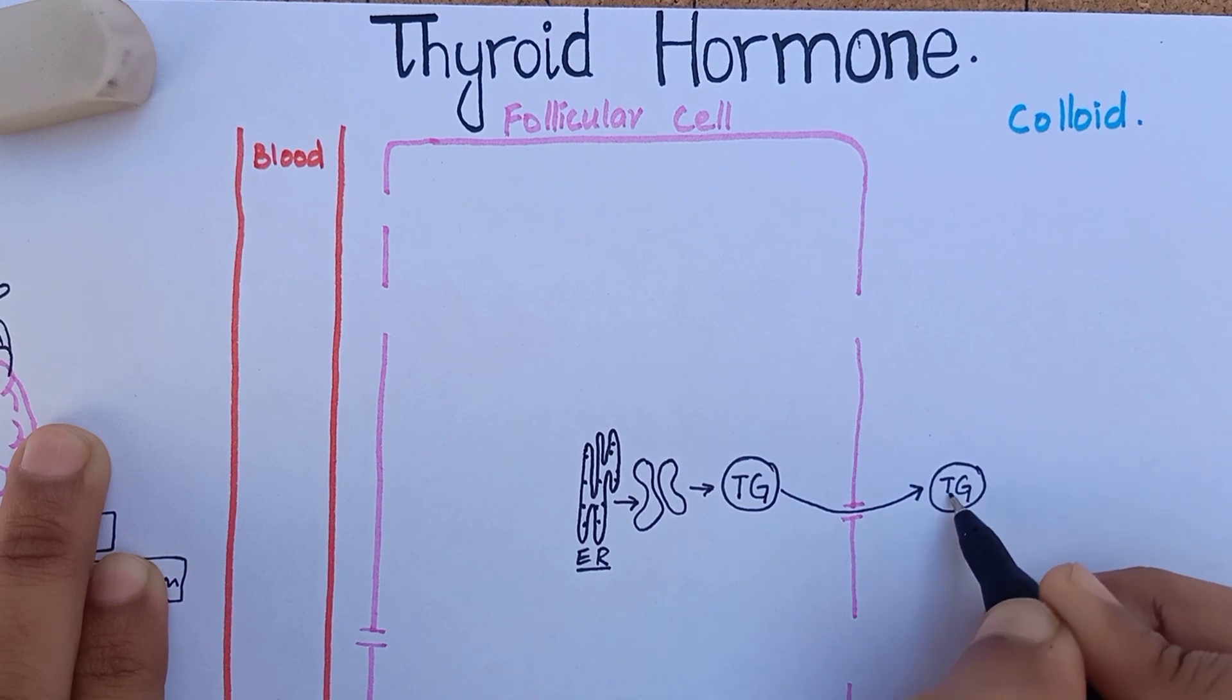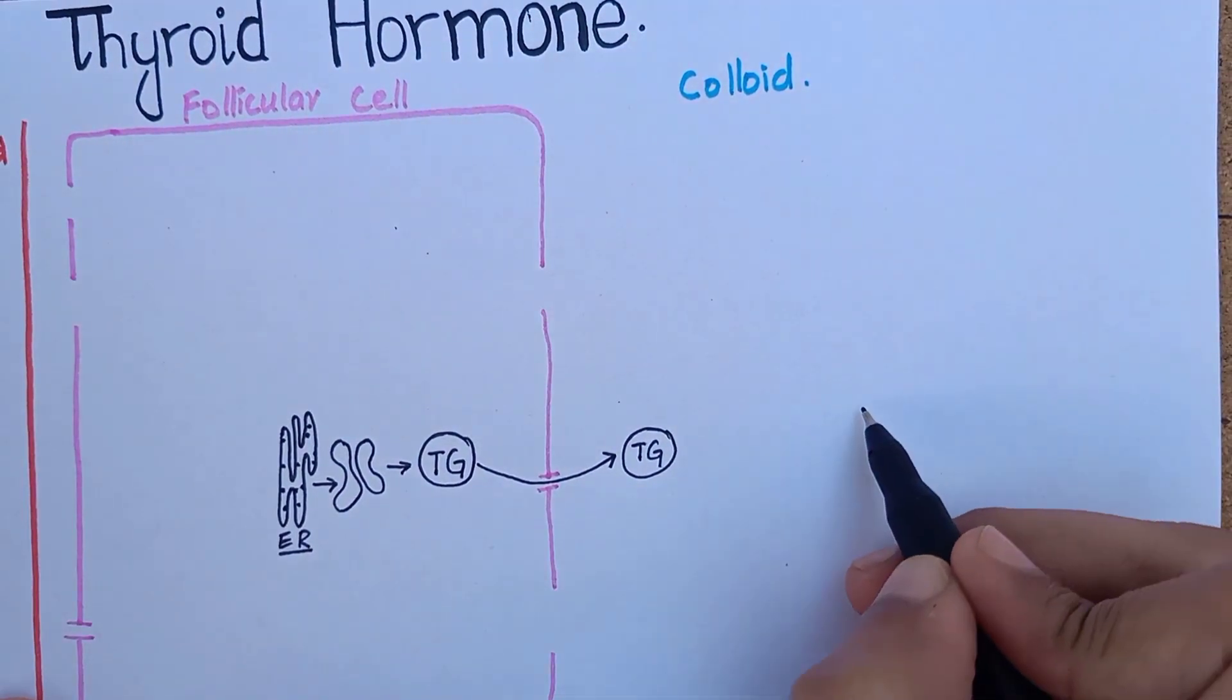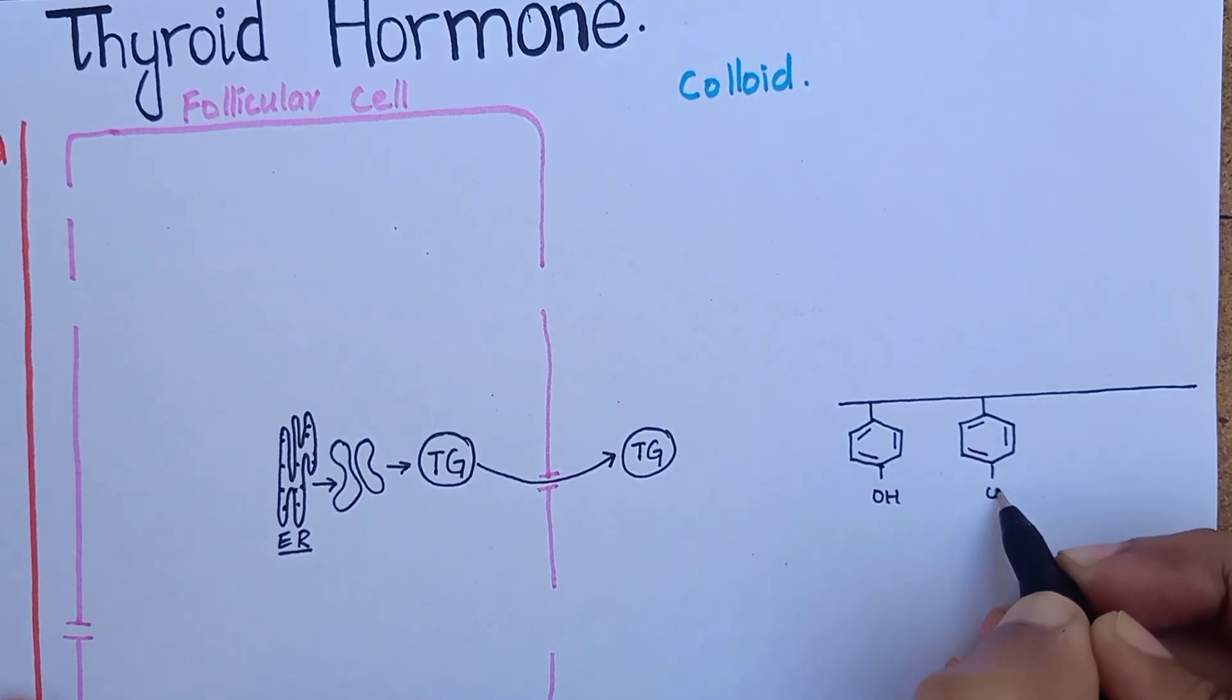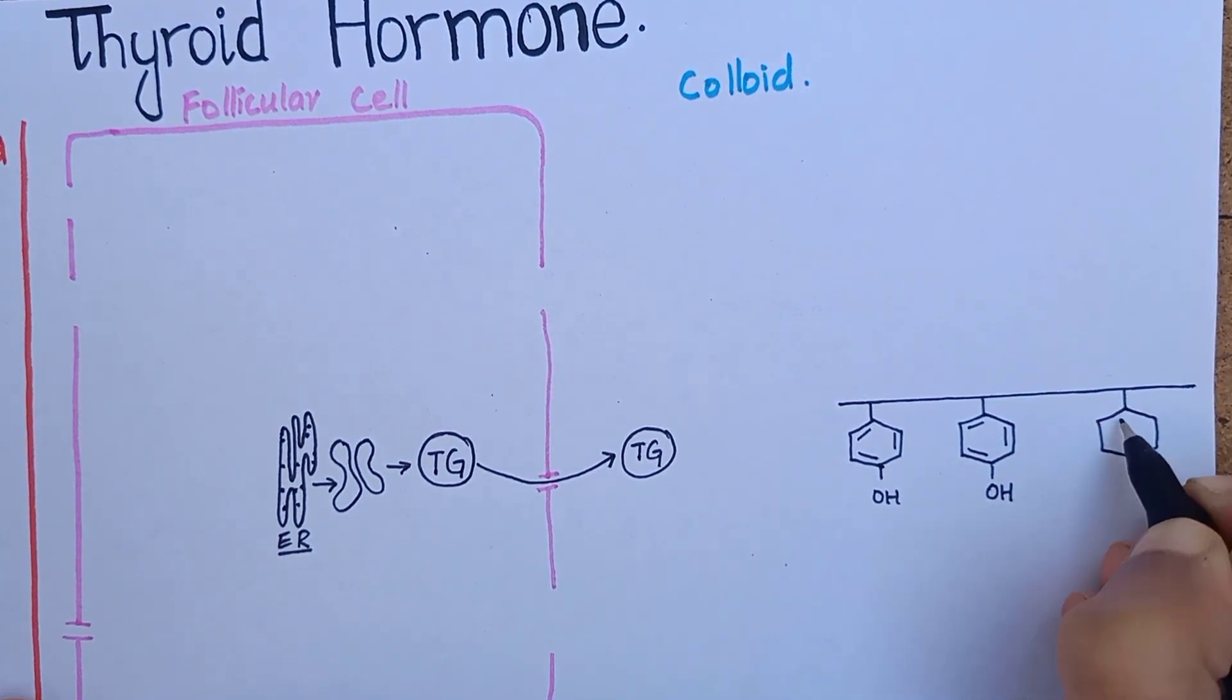Thyroglobulin is secreted into the colloid. Each molecule of thyroglobulin contains about 70 tyrosine amino acids. This is how a tyrosine molecule looks like.